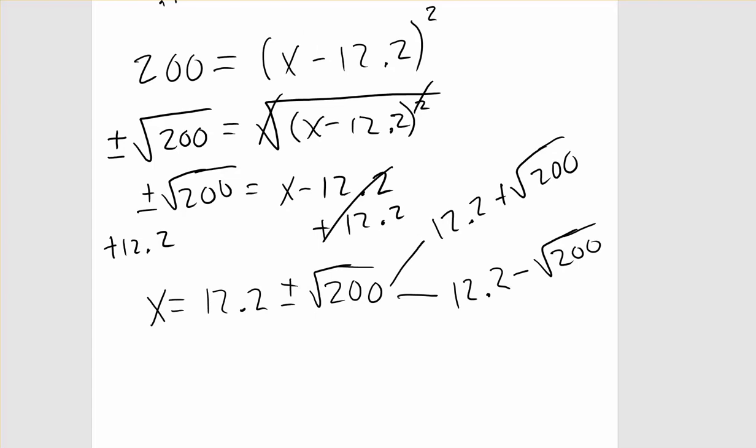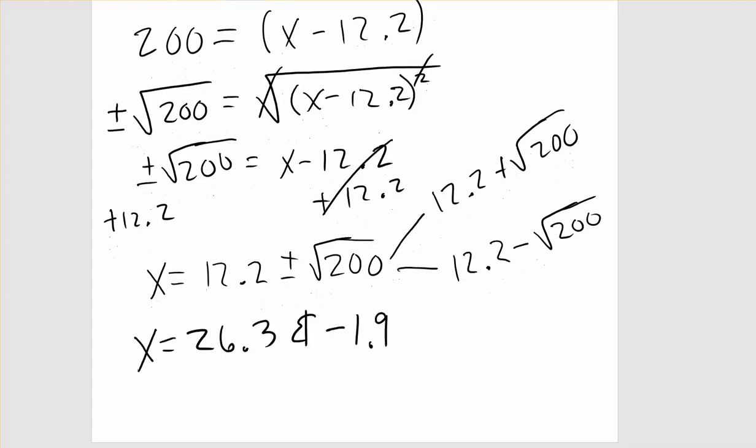Our two values then will be 12.2 plus or minus the square root of 200. So remember the two things we are plugging into the calculator are 12.2 plus the square root of 200. Hit enter. 12.2 minus the square root of 200. Hit enter. The two X values we get will be 26.3 and negative 1.9.